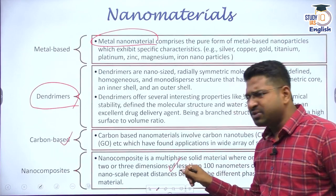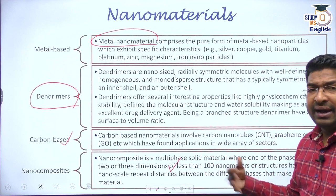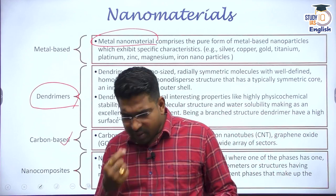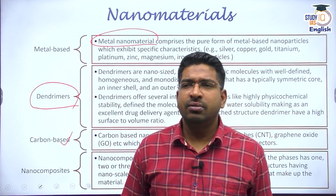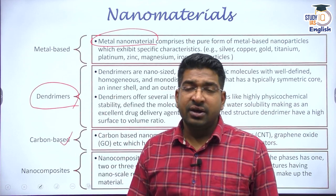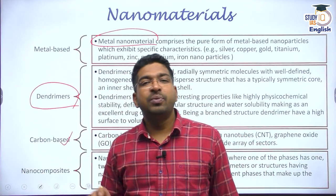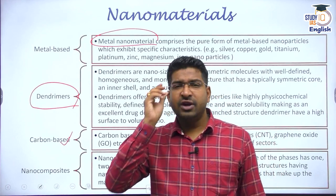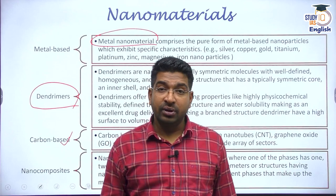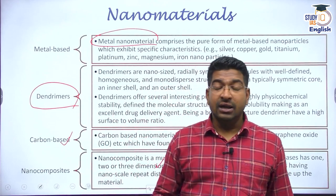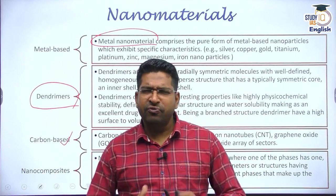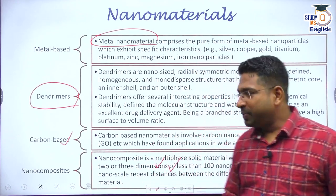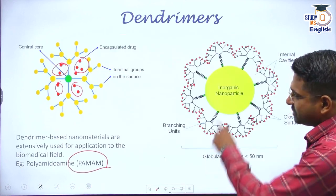We have also developed nano-composites, which we can see or feel in our day-to-day lives. For instance, a badminton racket made of nano-carbon is very lightweight yet strong. Spectacles are being made of nano-composites — extremely light but powerful. Cycle frames made of nano-composites are very light but very sturdy. If it is light and sturdy, performance will be better. So many such products have already come out involving nano-composites.